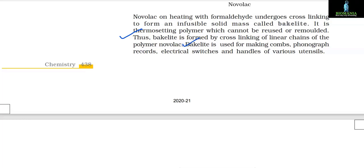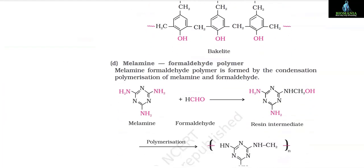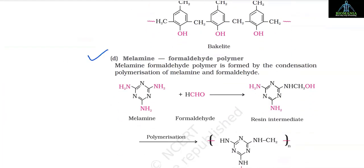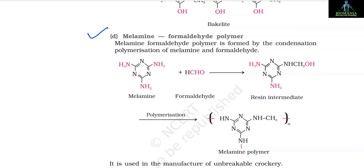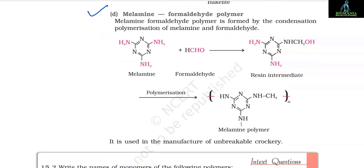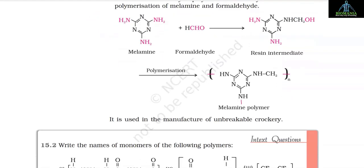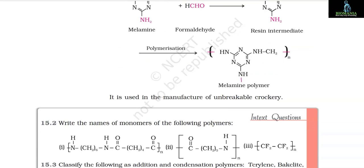Bakelite is used for making combs, phonograph records, electrical switches and handles of various utensils. D. Melamine formaldehyde polymer: Melamine formaldehyde polymer is formed by the condensation polymerization of melamine and formaldehyde to form a resin intermediate, which after polymerization forms the melamine polymer. It is used in the manufacture of unbreakable crockery.